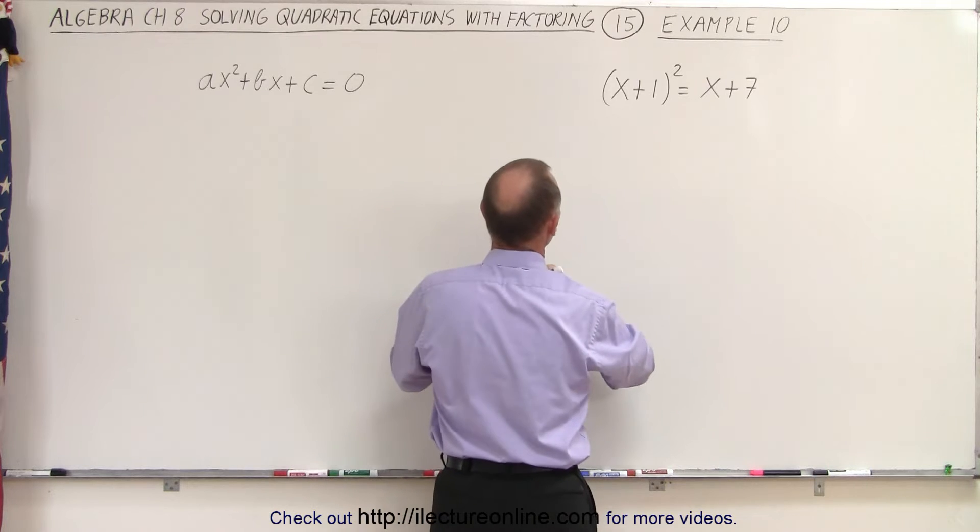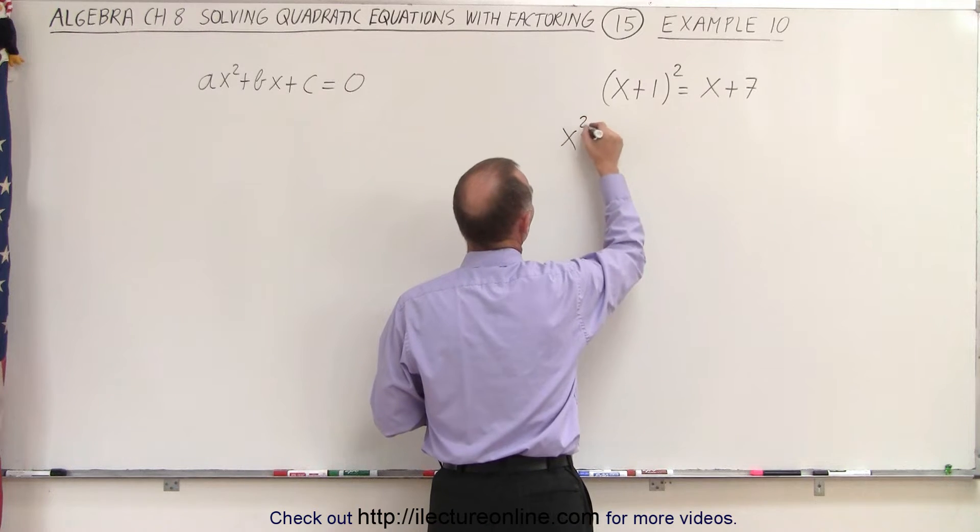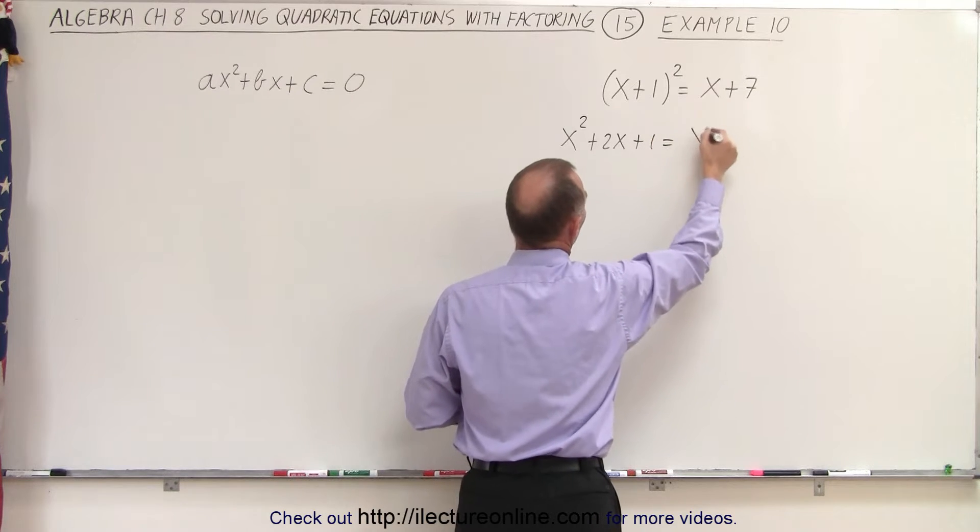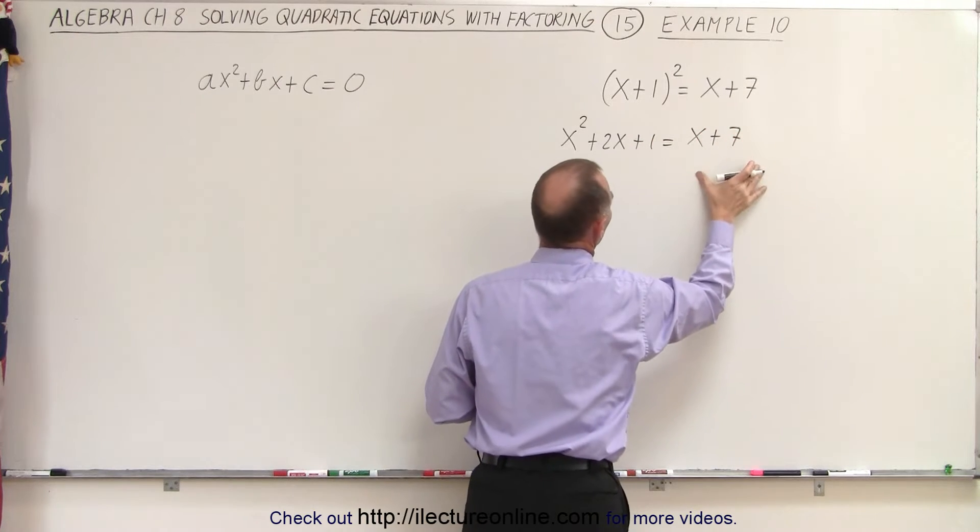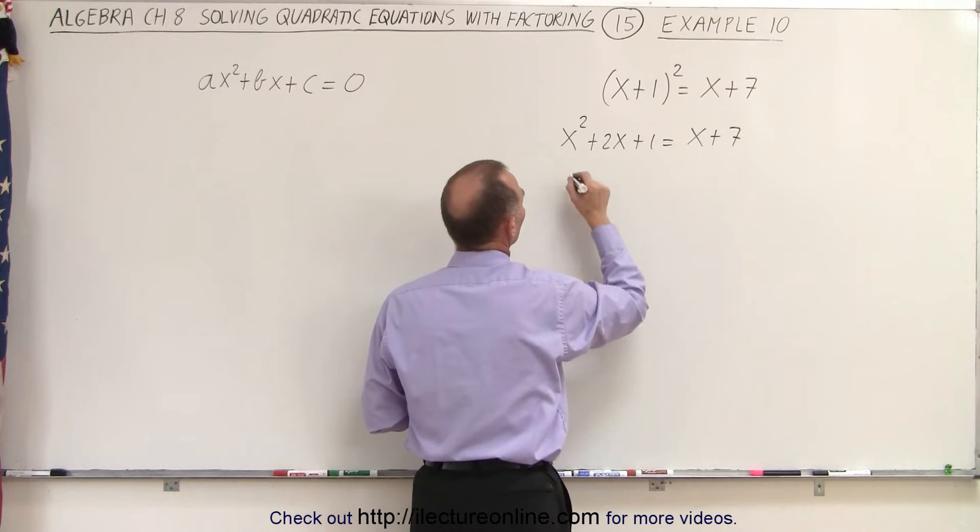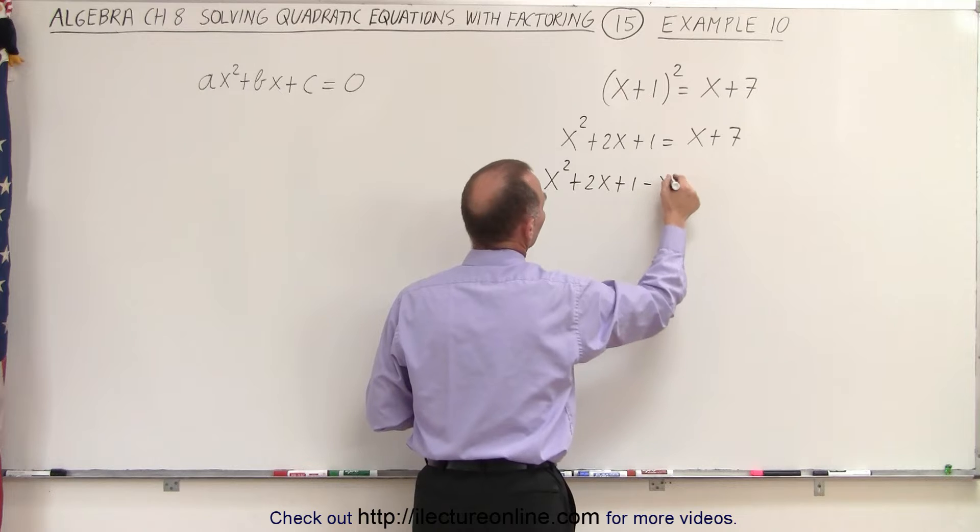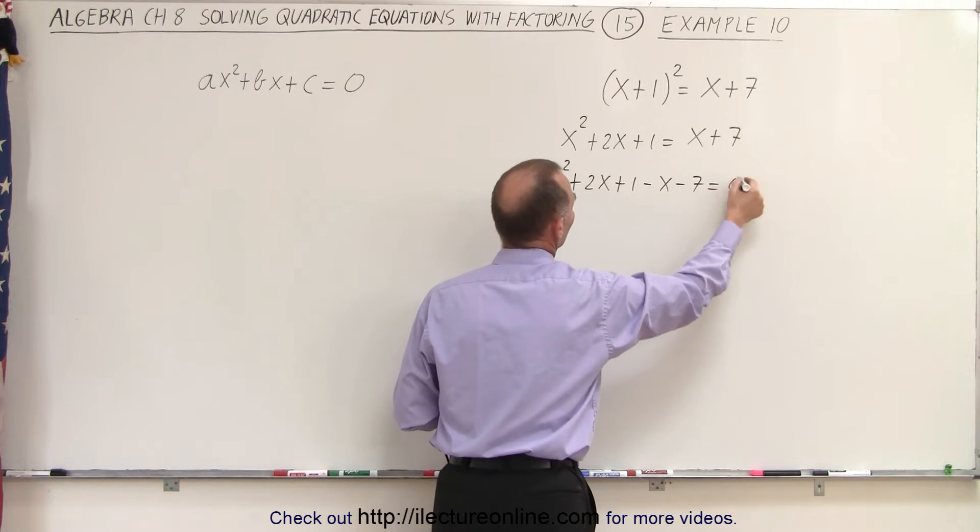Which means on the left side we end up with x squared plus 2x plus 1 and on the right side we still have the x plus 7. Now let's move everything over to one side. So it ends up with x squared plus 2x plus 1 minus x minus 7 equals 0.